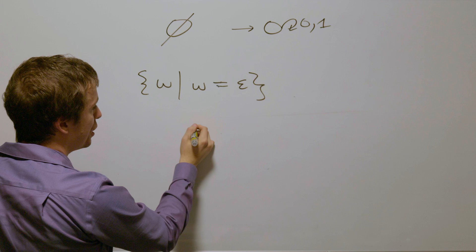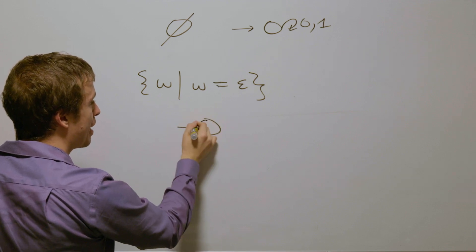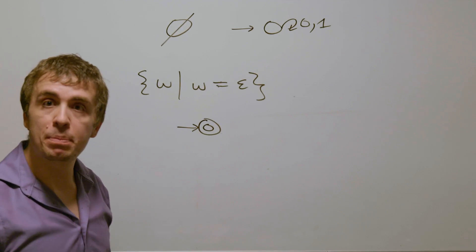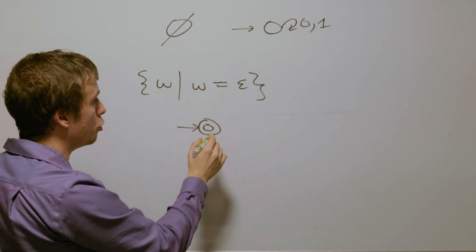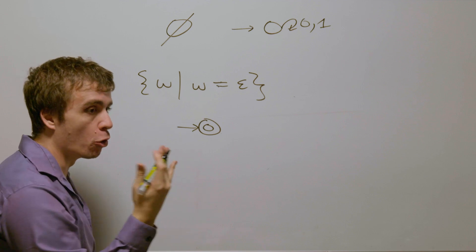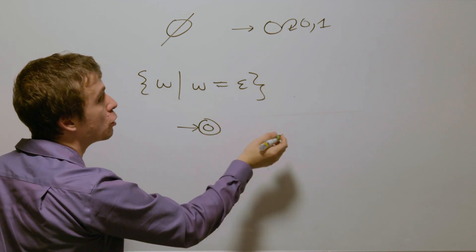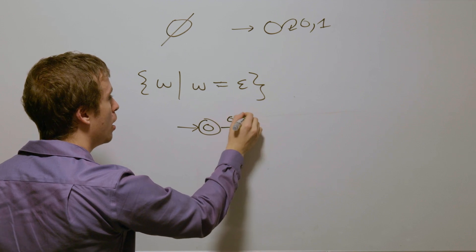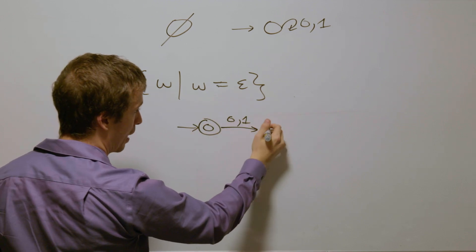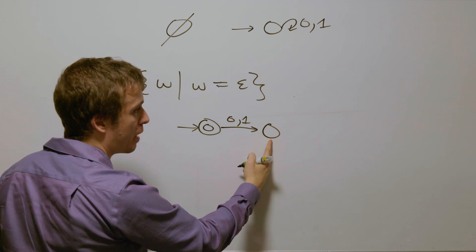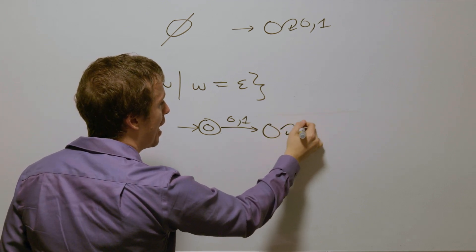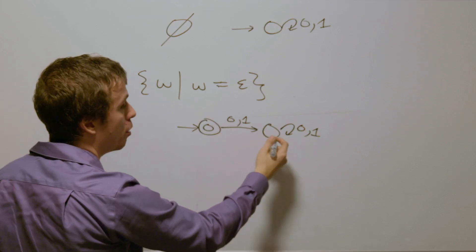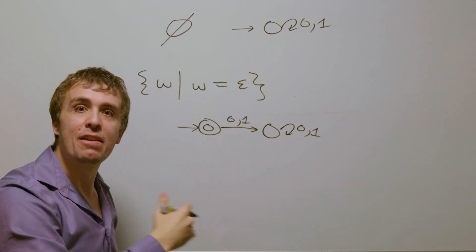Let's make a DFA for just the empty string. The start state must be accepting because I need to accept the empty string, and there's no other way to do so in a DFA since every transition reads something. But if I read anything at all, that is not the empty string, so it needs to go to a non-final dead state, because I'm not going to backtrack and read fewer characters.